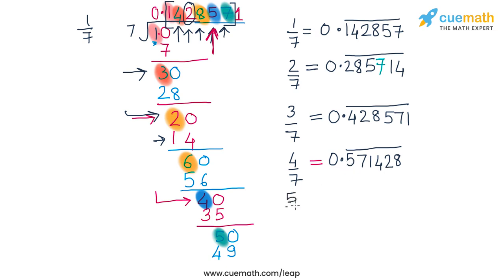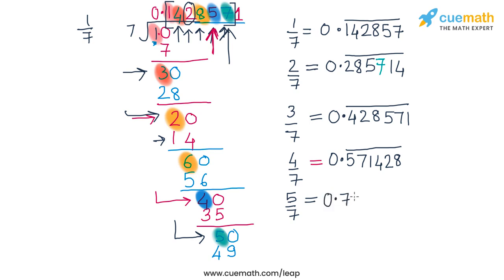Similarly for 5 by 7, it starts from the stage when the remainder was 5, and the corresponding multiplier was 7. So the first digit in the expansion of 5 by 7 is 7, and then the same cycle of digits continues: 7, 1, 4, 2, 8, 5 with a bar on this block of 6 digits.